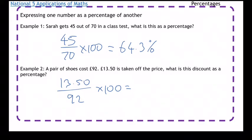So 13.50 divided by 92 times 100 gives me 14.7 percent.